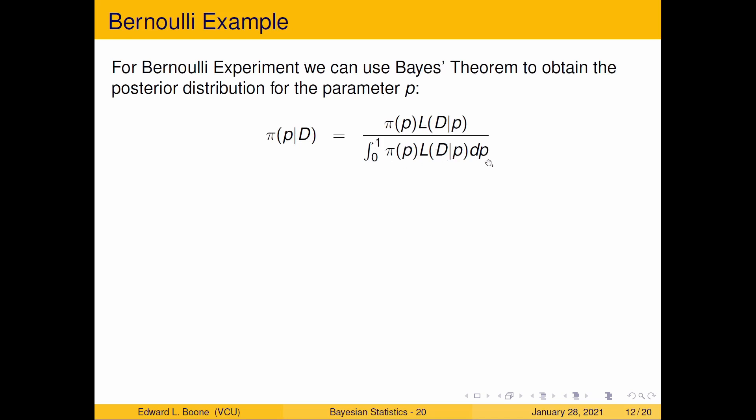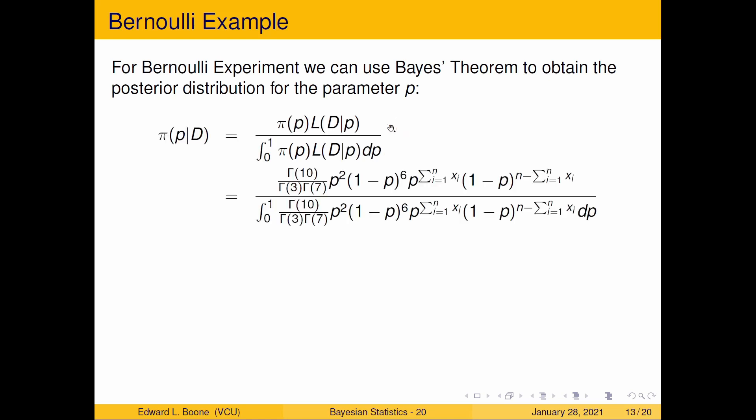In this case, we know that p goes between zero and one, so that's our limits of integration. We're going to plug in everything we know. I'm going to do it all at once. Why? Because it's like a band-aid rip. You just do it and get it over with.